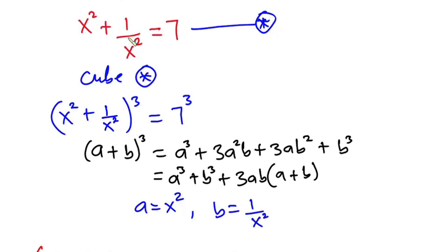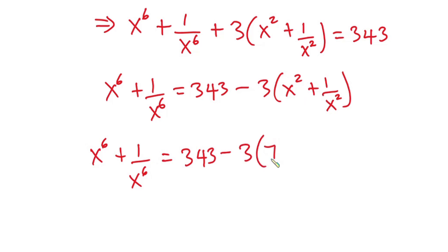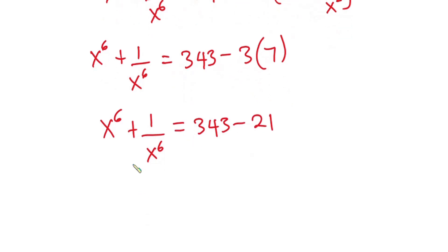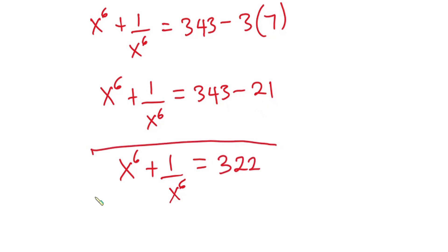From equation star, x squared plus 1 over x squared equals 7. So we have x⁶ plus 1 over x⁶ equals 343 minus 3 times 7, which is 343 minus 21, giving us x⁶ plus 1 over x⁶ equals 322. This is our final answer. Feel free to comment below and don't forget to subscribe. Thanks for watching, see you in the next video.